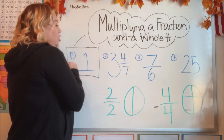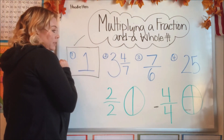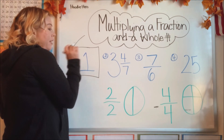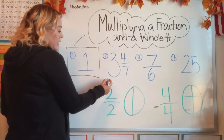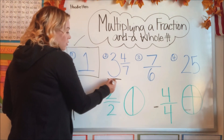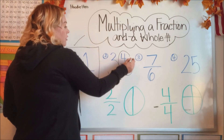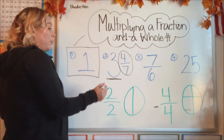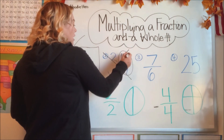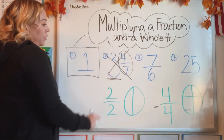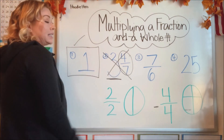Let's look at number two: three and four sevenths. Now that's kind of a tricky one because it does have a whole number in it — the three is a whole number. But it also has a fraction, which makes it a mixed number. So this would not be a whole number by itself; that would be a mixed number.